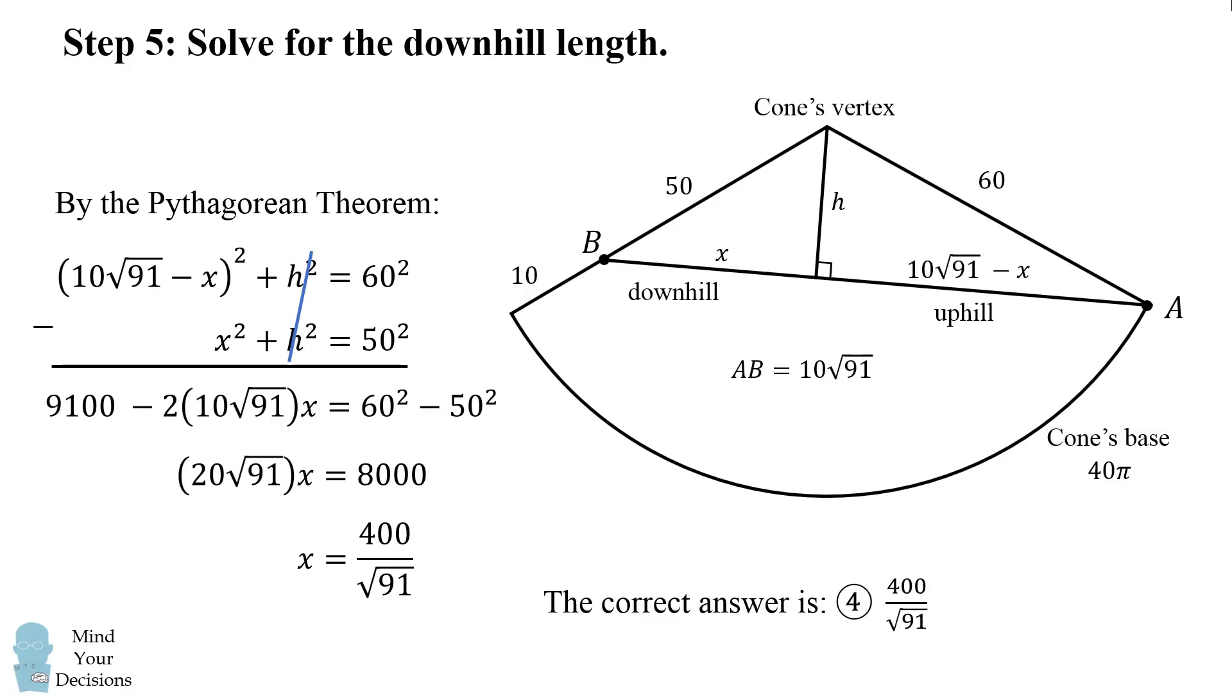And that's it. That's our answer. So the correct answer is 4: 400 divided by the square root of 91.